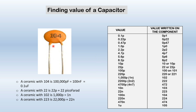We can also find the value of a ceramic capacitor from digits printed on it using a reference table. For example, '0p1' means 0.1 picofarad, '0p22' means 0.22 picofarad, '5p6' means 5.6 picofarad. If '102' is written on the capacitor its value is 1000 picofarad, and if '103' is written its value is 10 nanofarad. We can find the capacitance value using this table.